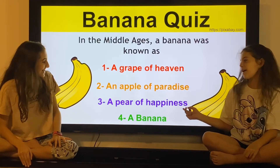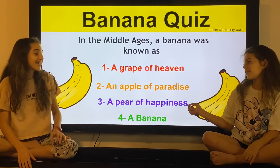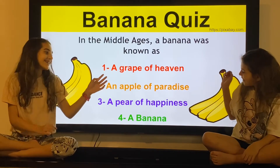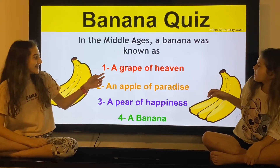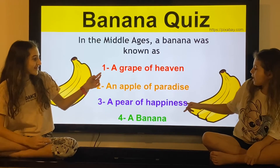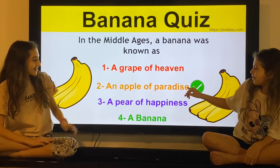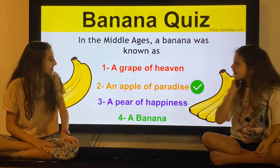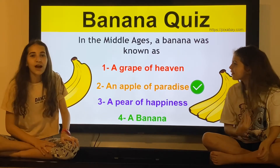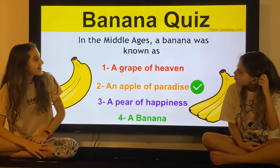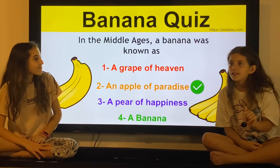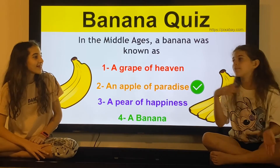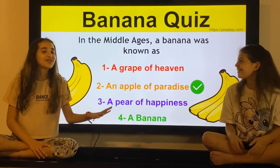I don't know why — a pear of happiness. I'm going to go with 'grape of heaven,' I just like that one. It's a grape, but like, no. We both didn't get it right. What's an 'apple of paradise'? It doesn't even look like an apple. Maybe they didn't have apples at that time, and then they made apples after that, and named them apples, and made it a banana. Okay, let's just go to the next one.